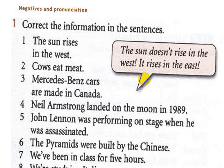Number two: 'Cows eat meat.' Because 'cows' is plural, it takes 'do'. When we make it negative, it becomes 'Cows do not' or 'don't eat meat.' Number three: 'Mercedes-Benz cars are made in Canada.' For negative, we say 'Mercedes-Benz cars aren't made in Canada.'